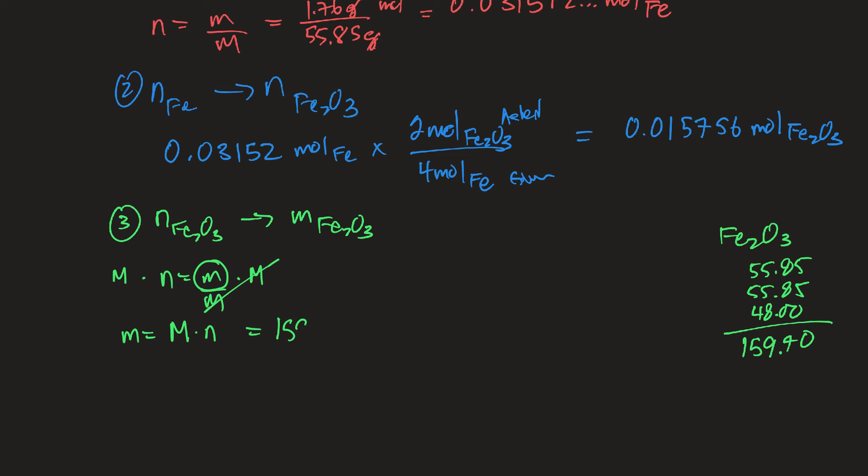So 159.70 grams per mole times the moles that I just got from right there. So 0.015756-ish moles, the moles cancel. So if I multiply those, I get my answer. And I still have that number on my calculator. So now I'm just going to go times 159.70. So I come up with 2.516311, et cetera, grams of Fe2O3.